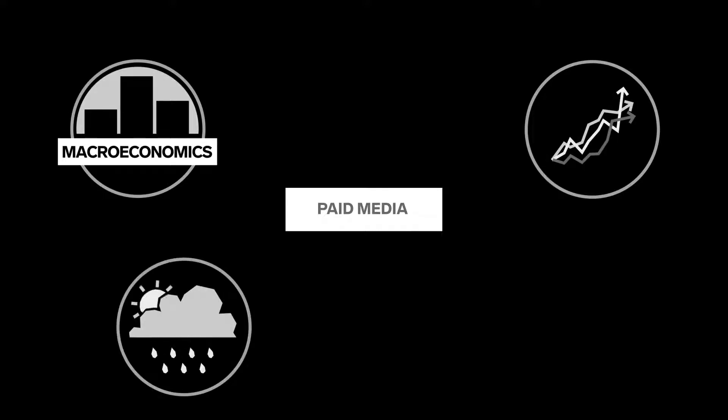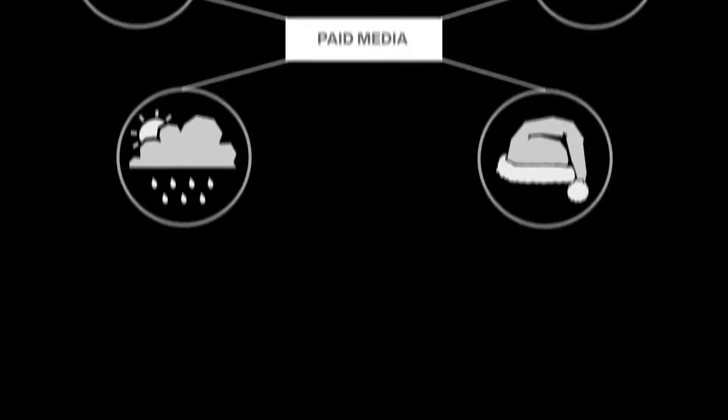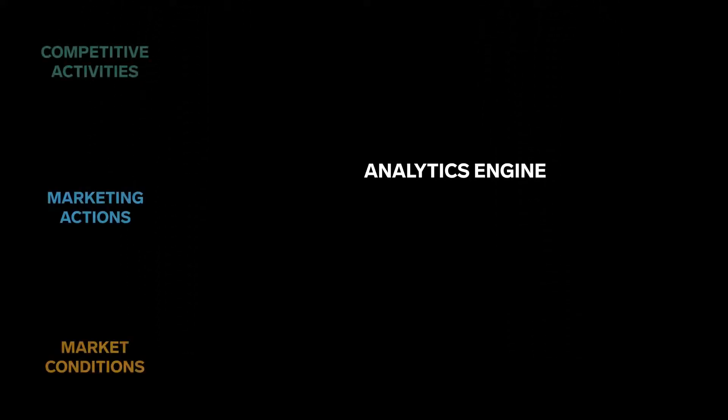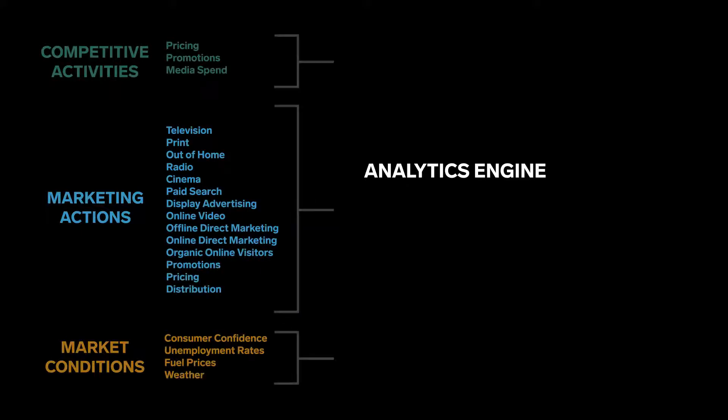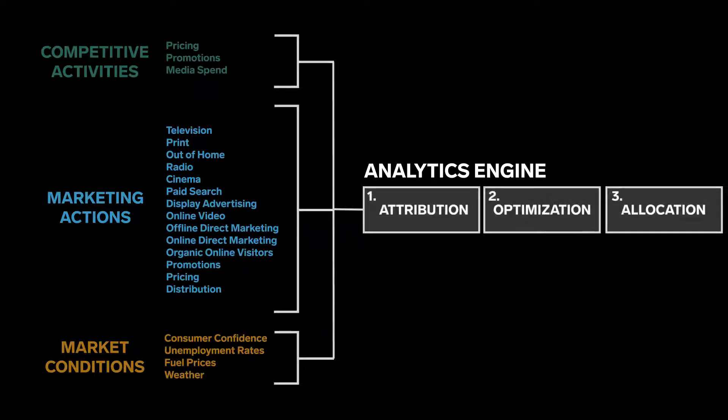Hamilton AI also includes macroeconomic and other external factors that can impact the effect of paid media. All marketing actions and performance metrics are obviously included, as well as data to describe the market conditions, such as consumer confidence, unemployment rates, and competitive activity, including paid media investments and changes to product and pricing. In addition to this level of intricacy and granularity, Hamilton AI is also exceedingly flexible.